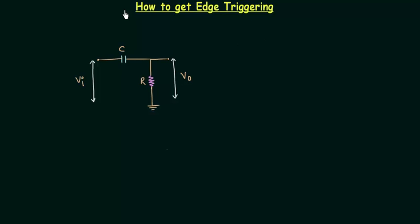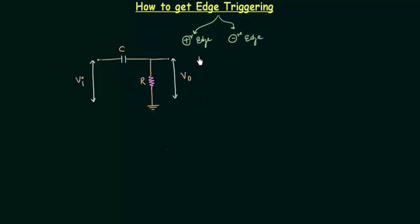There are two types of triggering. The first one is level triggering, whereas the second one is edge triggering. Edge triggering is further classified into two types: positive edge triggering and negative edge triggering. Positive edge triggering is for the rising edge when the clock goes from 0 to 1, whereas negative edge triggering is for the falling edge when the clock goes from 1 to 0.